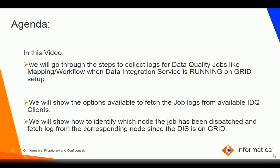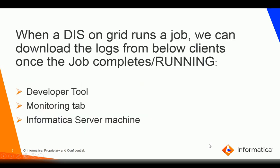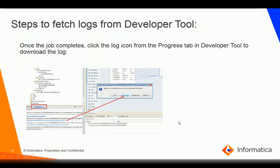Especially when the DIS is running on a grid, it is important to know the node on which the job has been dispatched in order to get the logs if we want to log into that particular node and download them. These are the three available options to download the logs: the first is the developer tool monitoring tab, and the second involves the Informatica server machine.